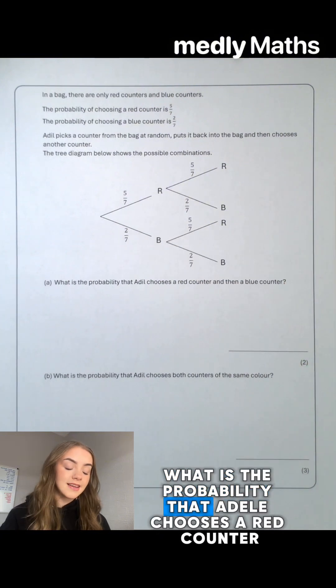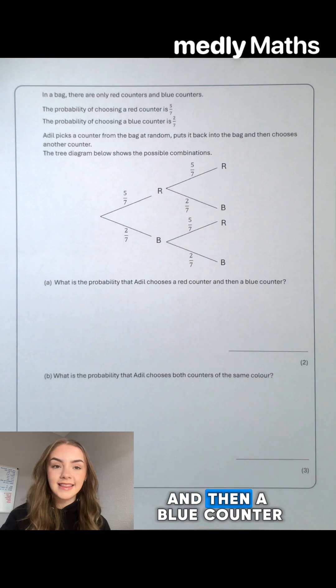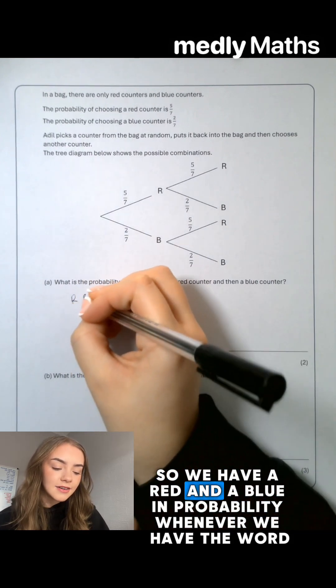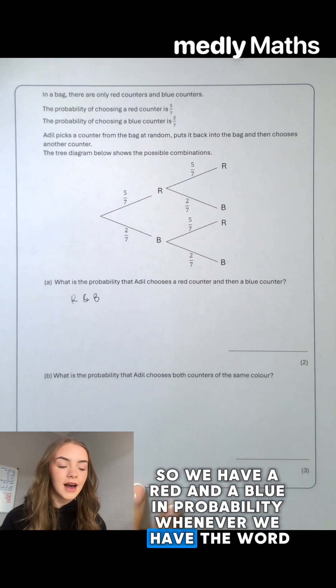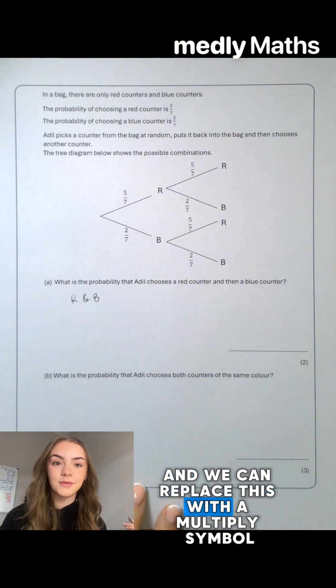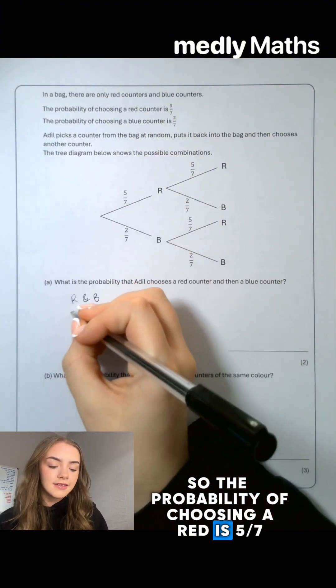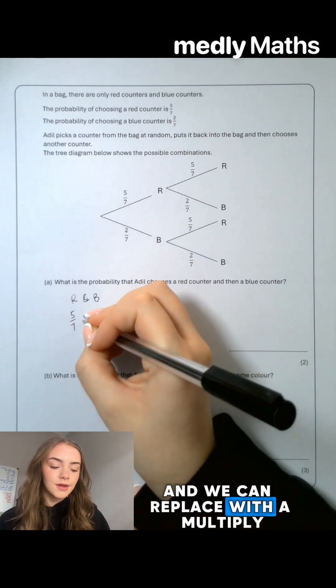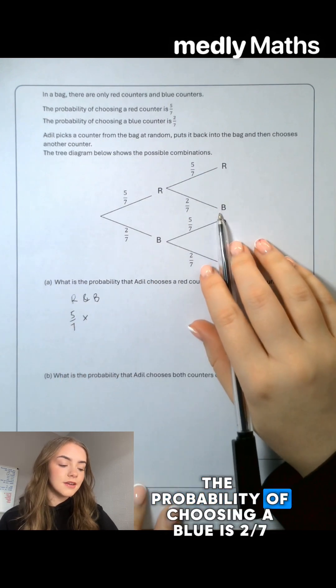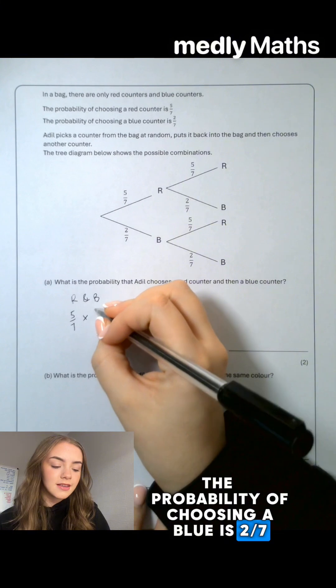What is the probability that Adil chooses a red counter and then a blue counter? So if we have a red and a blue, in probability whenever we have the word 'and' we can replace this with a multiply symbol. So the probability of choosing a red is 5 sevenths, and we can replace with a multiply. The probability of choosing a blue is 2 sevenths.